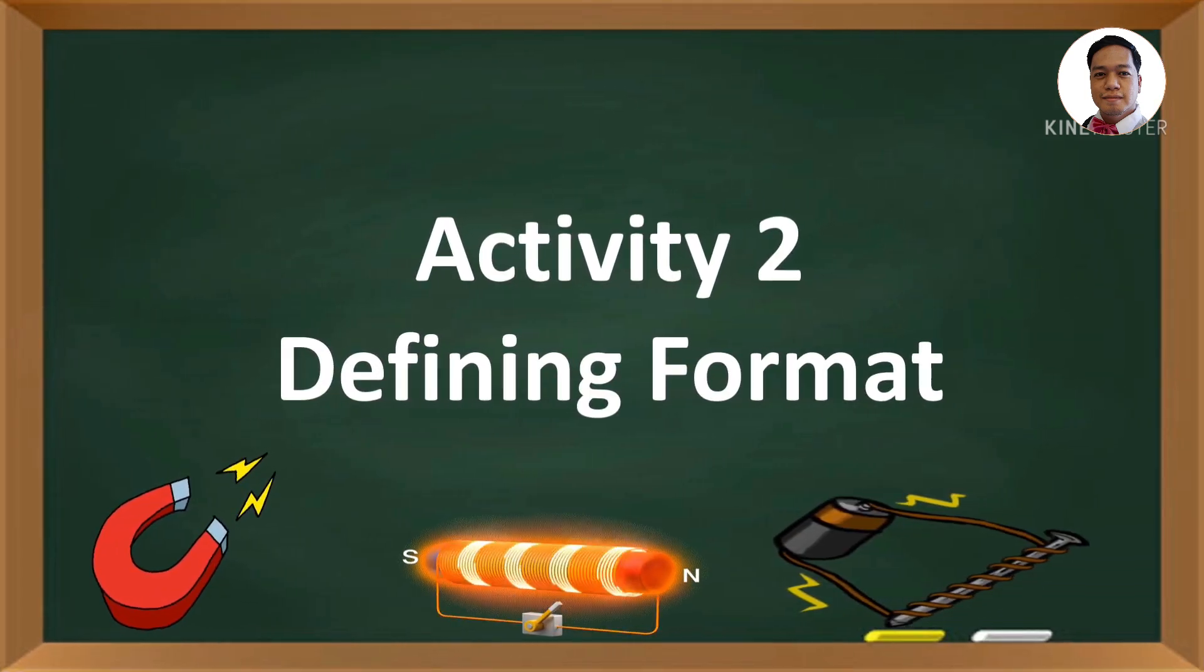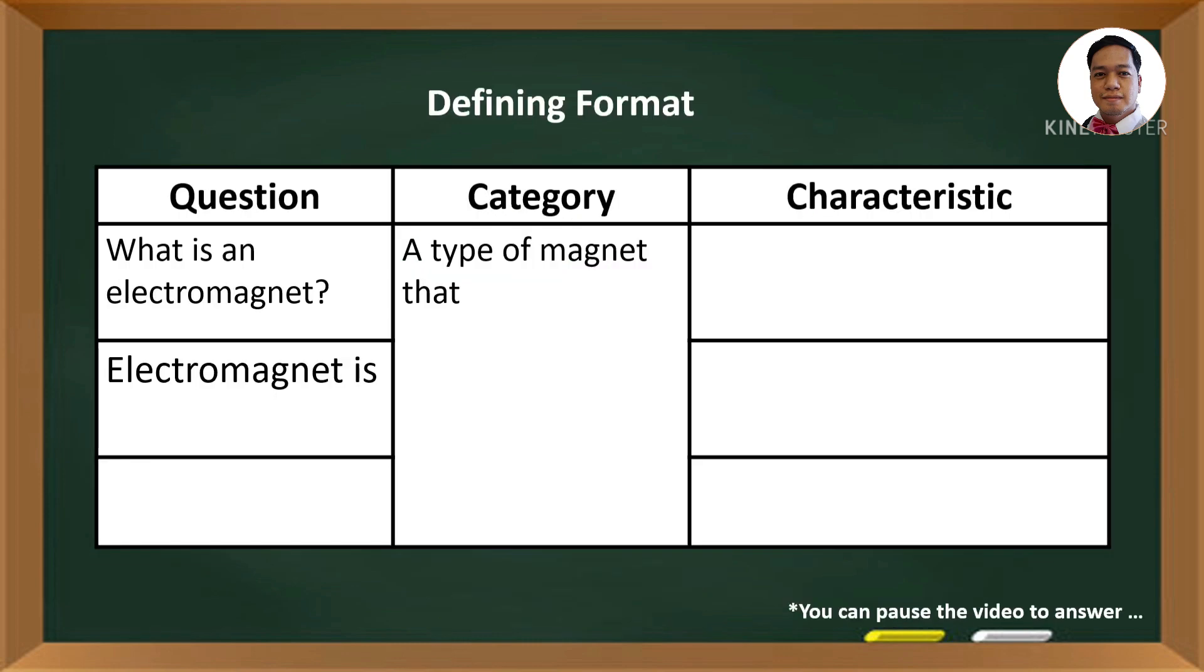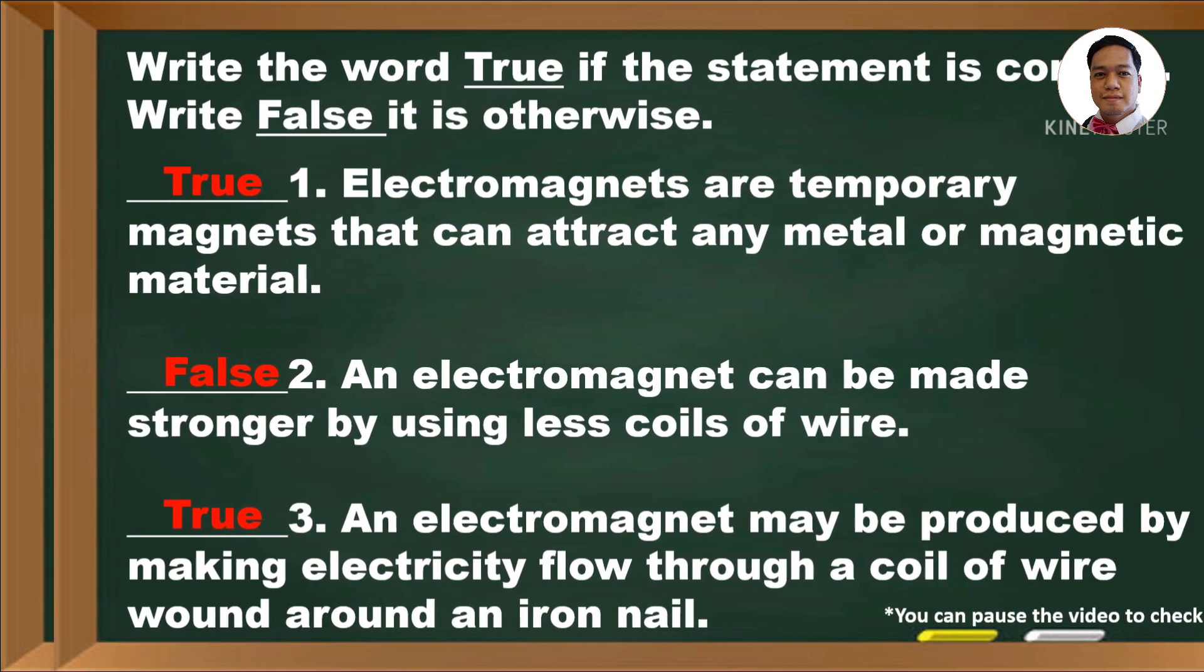Activity number 2: Defining format. Write the characteristic of an electromagnet on the third column. Let's check your answer.